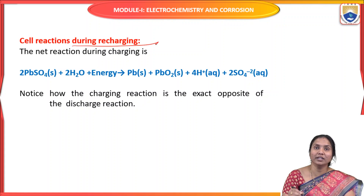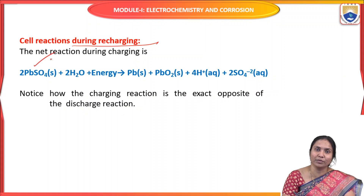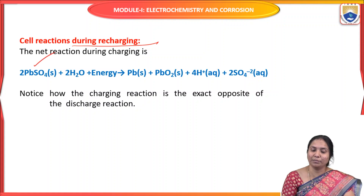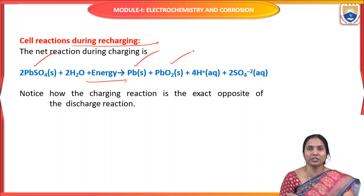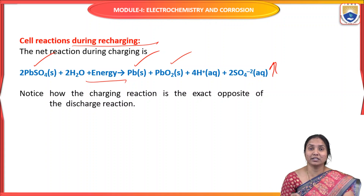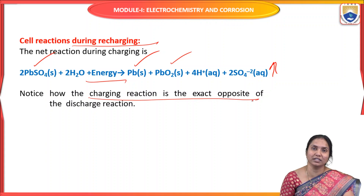During recharging, when the battery's charge decreases, we pass electricity in the opposite direction. The net charging reaction is the reverse of discharging: PbSO₄ + 2H₂O is converted back to lead, lead dioxide, and H₂SO₄. During discharging the concentration of H₂SO₄ decreases, and during charging the concentration of H₂SO₄ increases.